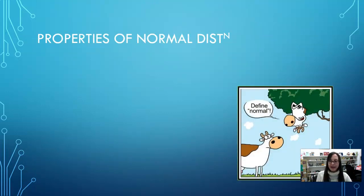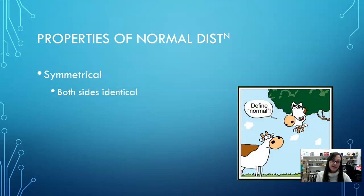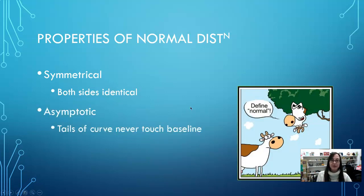When you're looking at a normal distribution, there are two important properties. First, it is symmetrical — which goes back to the fact that it is not skewed in either direction. That means if you put a line right down the middle, it's exactly the same on both sides. Both sides are identical; it's a mirror image on either side of that middle line.